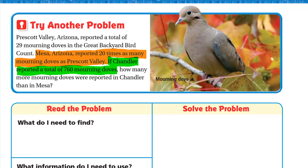The question is: how many more mourning doves were reported in Chandler than in Mesa? Chandler's number is already given: 760. We need to find how many were in Mesa. Since Mesa reported 20 times as many as Prescott Valley, and Prescott Valley had 29, we multiply 20 times 29 to find Mesa's count.